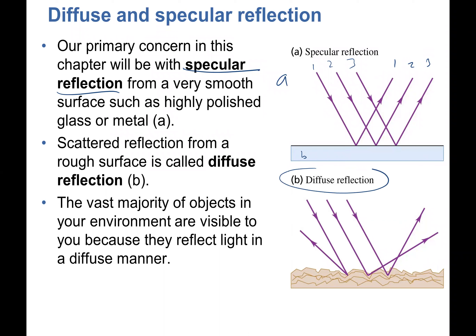Compare that to diffuse reflection, where rays one, two, and three come in parallel but go in random directions after reflecting. This happens because the surface is not smooth — it has bumps and imperfections that diffuse the light. So A is specular reflection and B is diffuse reflection; these are two extremes. We'll always use specular reflection because mirrors and lenses have very smooth surfaces.